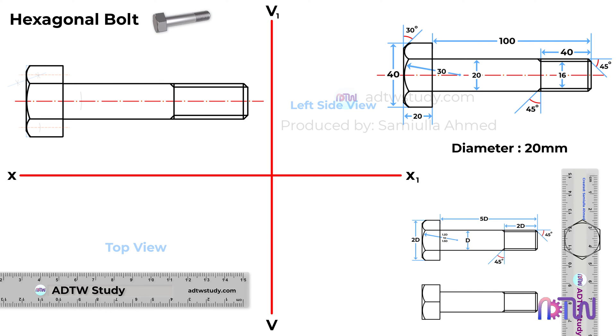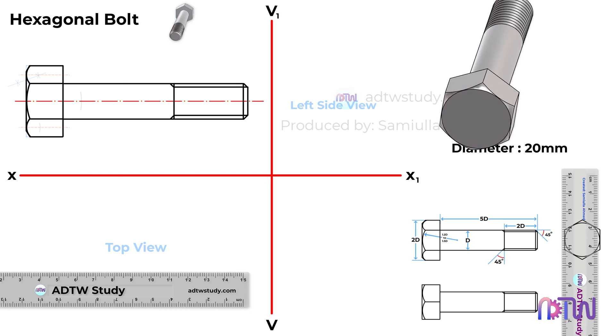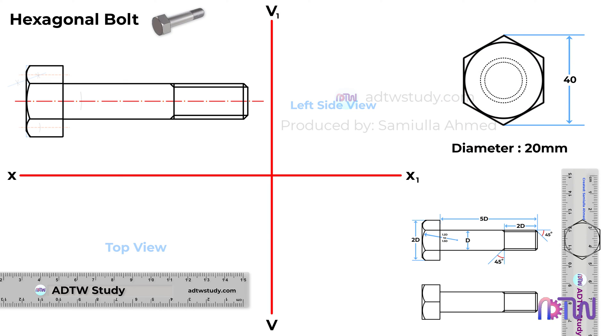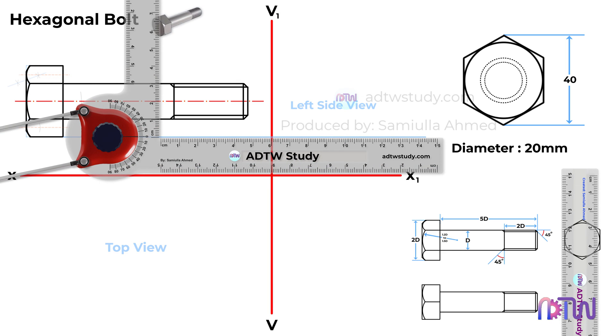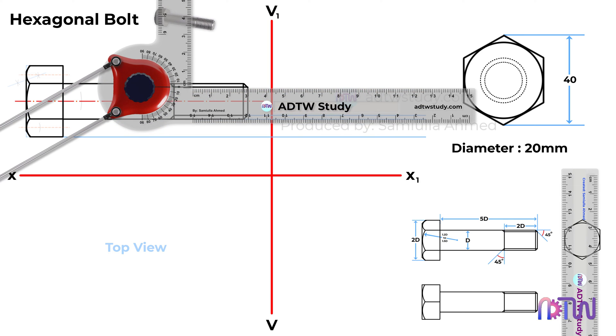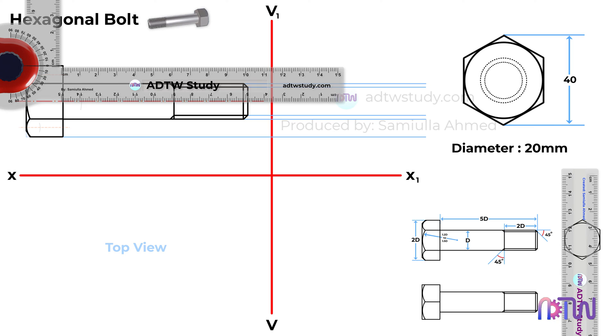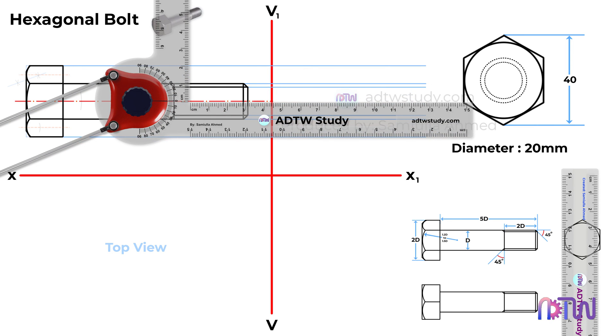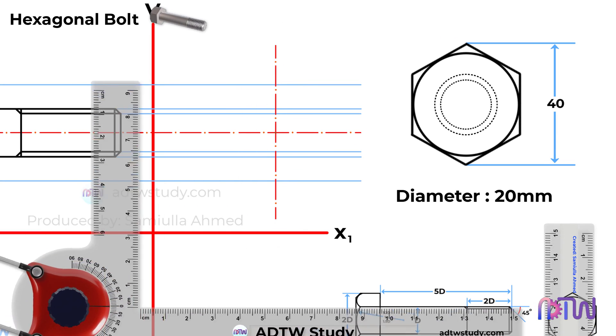This concludes the front view of the bolt. Next, let's proceed to sketch the left side view of the bolt. Begin by projecting the horizontal lines from the front view using a drafter. Draw a vertical axis line as indicated.